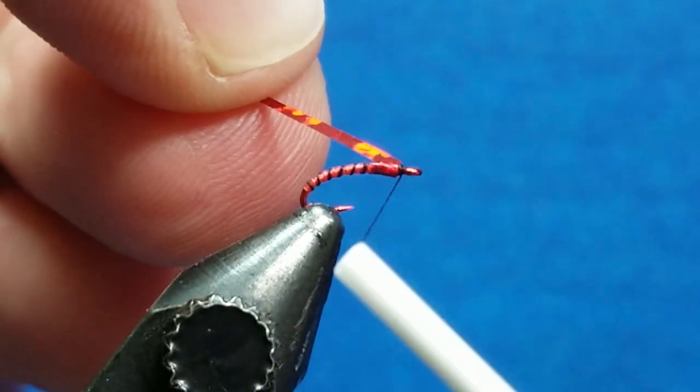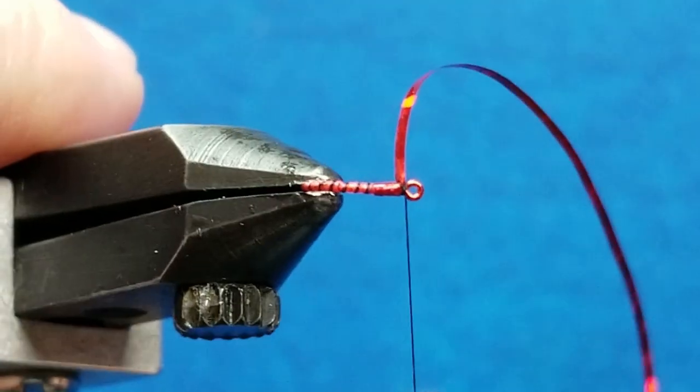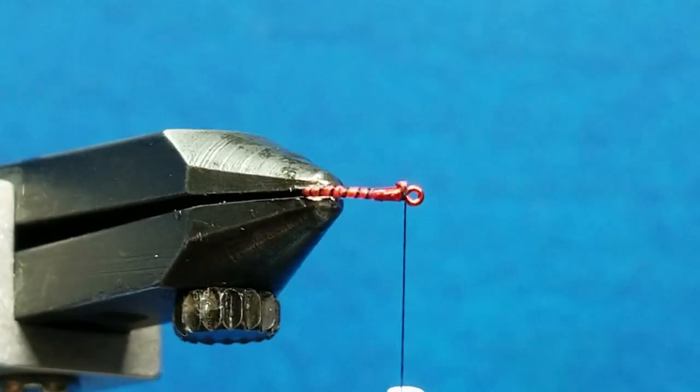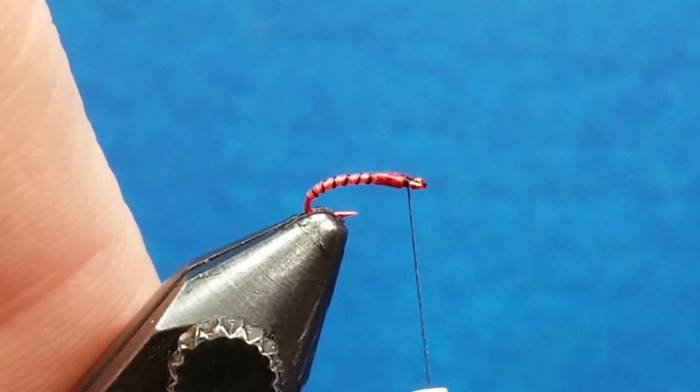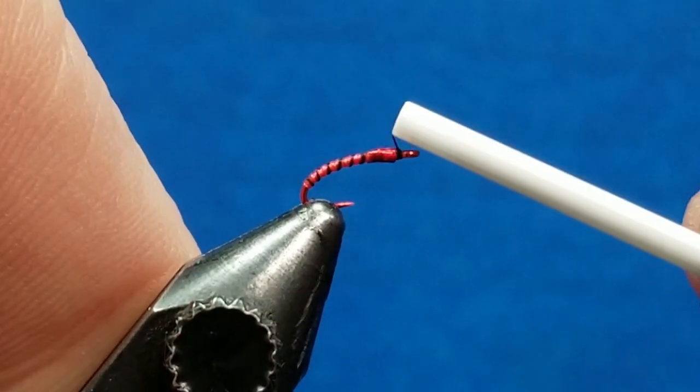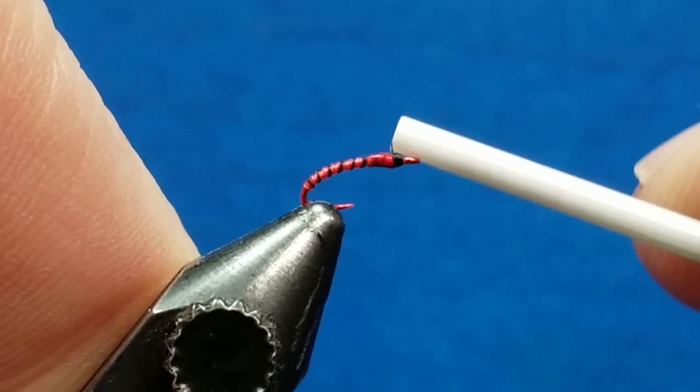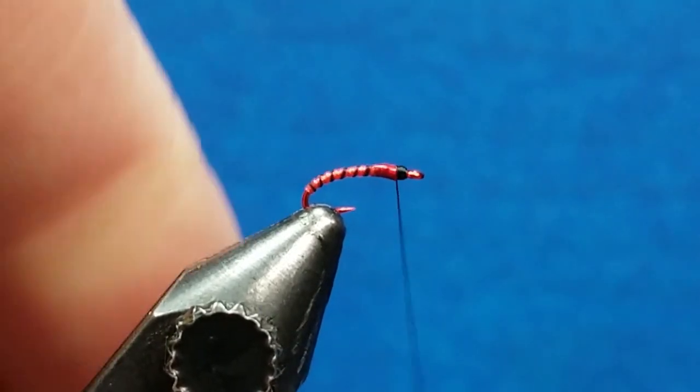Cinch that down, take a wrap or two behind the eye, and snip that off. I'm going to take the thread and very simply build up a little bit of a thread head here. It's going to be an accent on the front part of the fly for us.